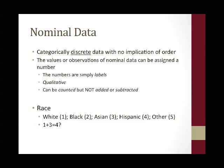As you will recall, nominal data is categorically discrete data with no implication of order. The values or observations of nominal data can be assigned a number, but these numbers are simply labels — they're qualitative. They can be counted, but not added or subtracted.